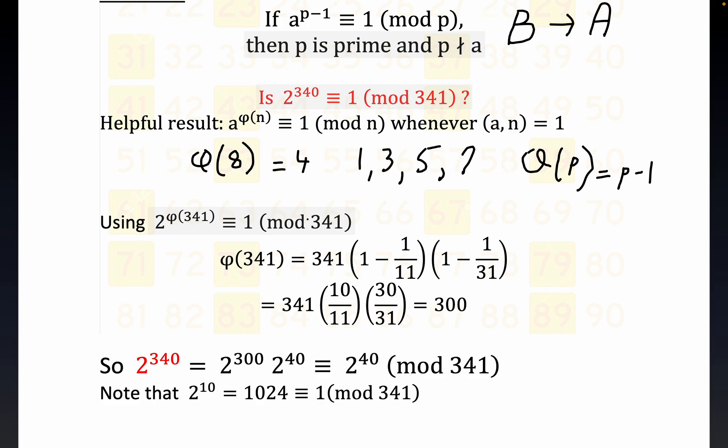Now there's another result that I won't prove - I don't know if I could prove it - that helps you. It's hard to know what the totient of 341 is. This is a formula that lets you do that: 11 and 31 are the prime factors, the only prime factors of 341. So this result actually gives you 300, which is important here.